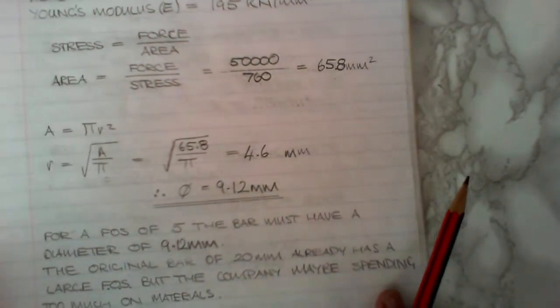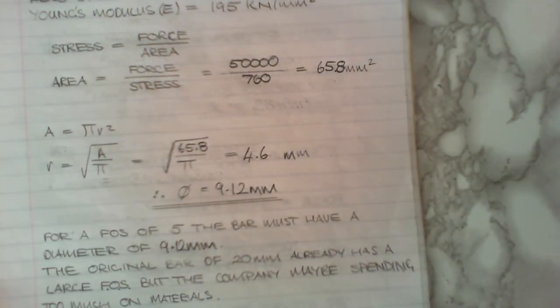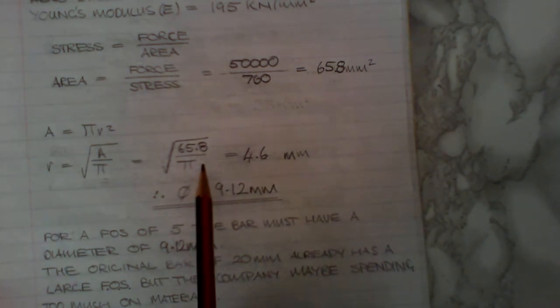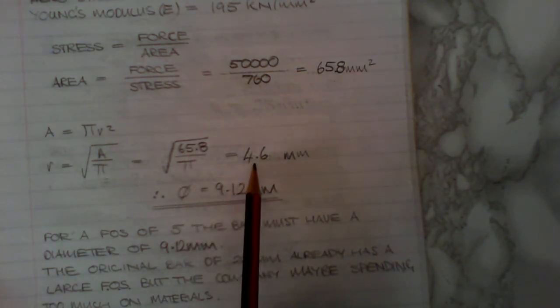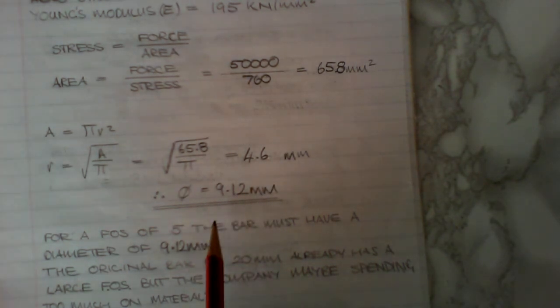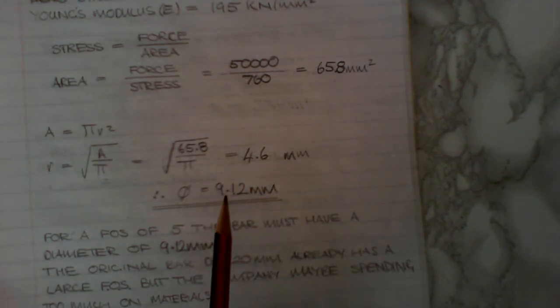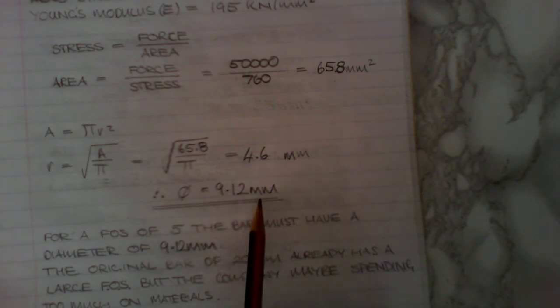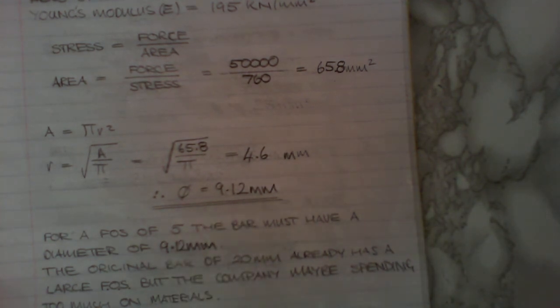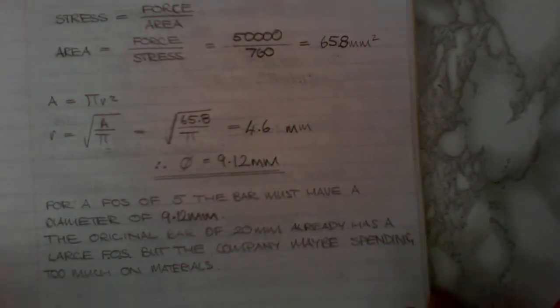Area, which is pi r squared. You could find the radius by getting the square root of the area divided by pi. Here it is here. And that equals to 4.6 millimeters. We usually, we do everything in diameter. So that's 9.12 millimeters in diameter. And then you've got to discuss it and you get a mark for the discussion part. For factor of safety 5, the bar must have that in diameter. So the original bar is 20mm in diameter. So it's already got a large enough factor of safety. But you could say the company might be spending too much money on materials.